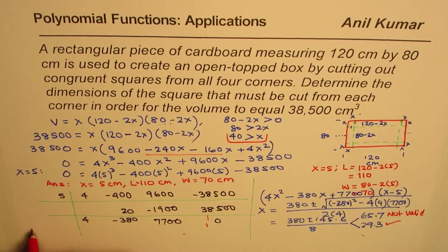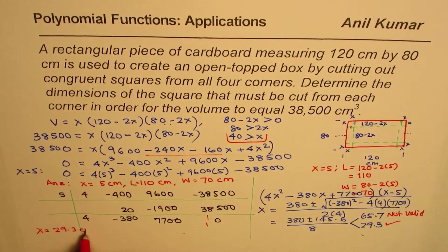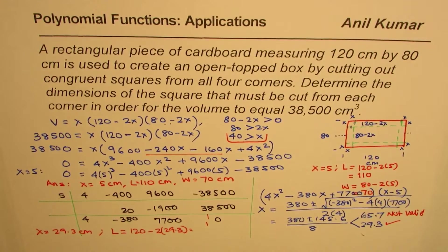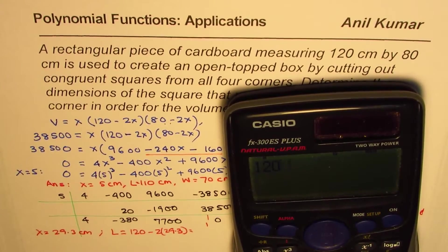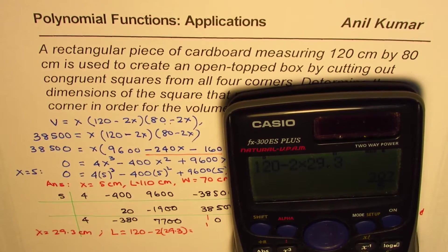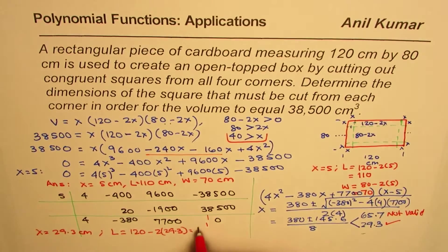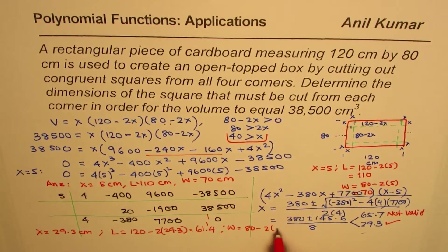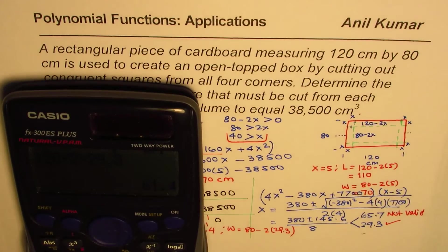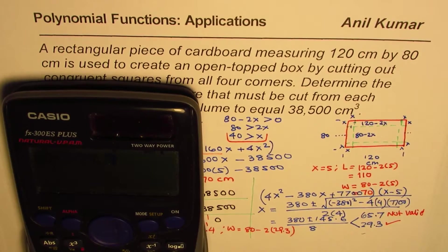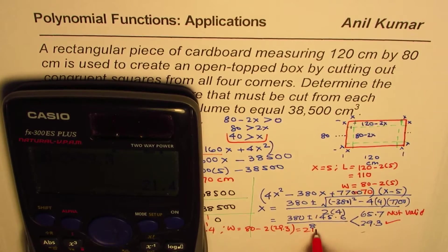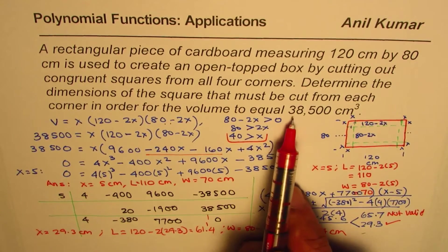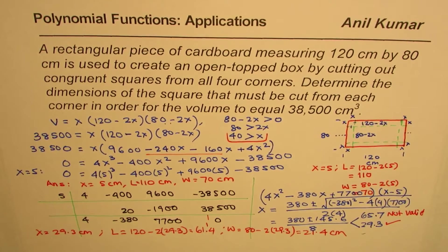In that case, length will be equal to 120 minus 2 times 29.3, and that is equal to 61.4, and width will be equal to 80 minus 2 times 29.3, equals to 21.4 centimeters. So that is another set of values which we can get for a volume of 38,500. You get an idea. So that is how we can solve such a question.